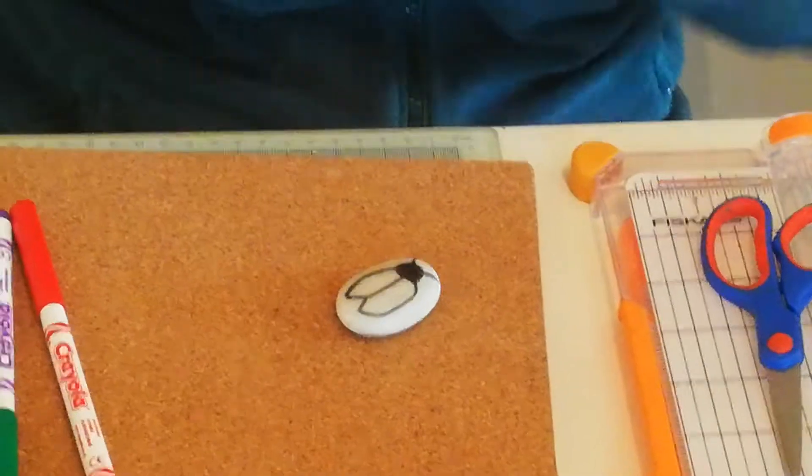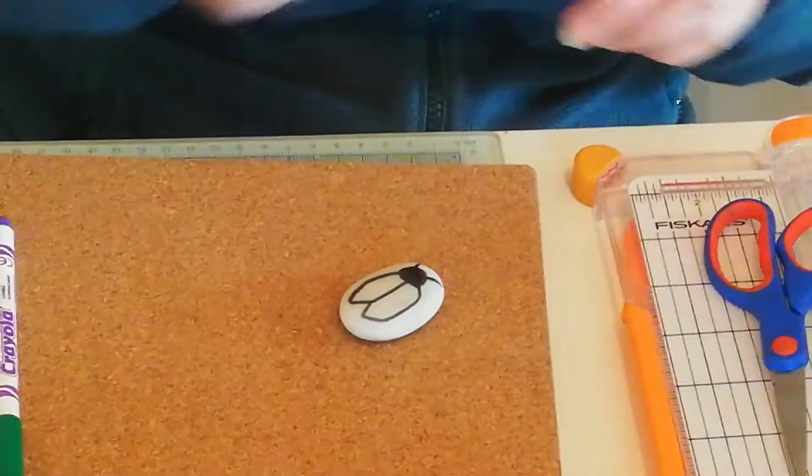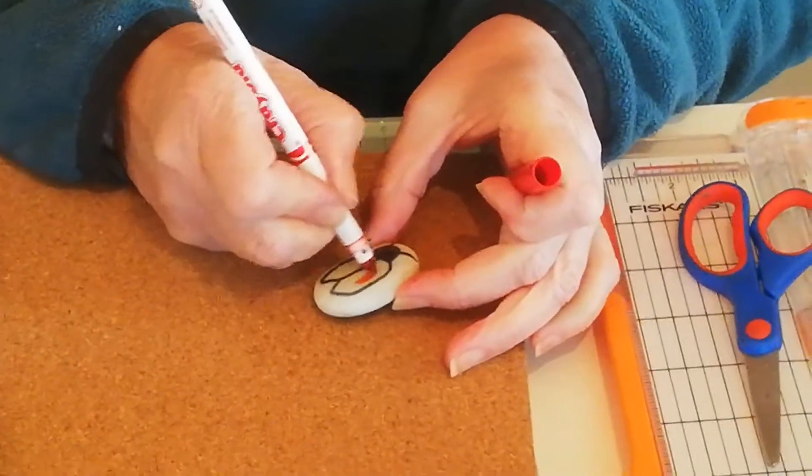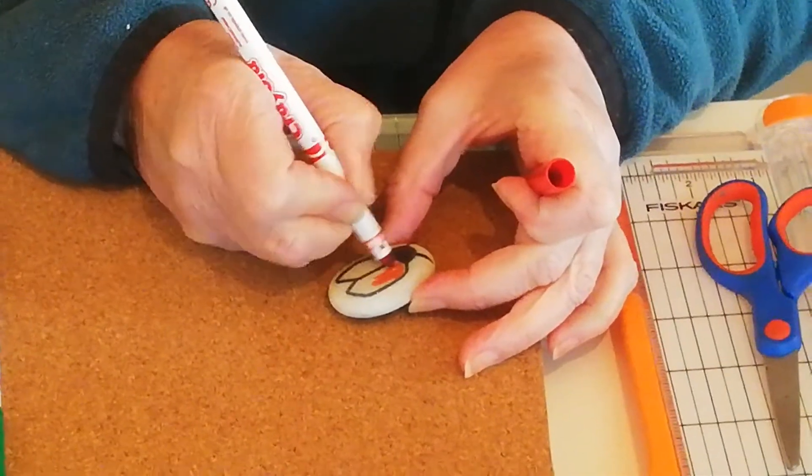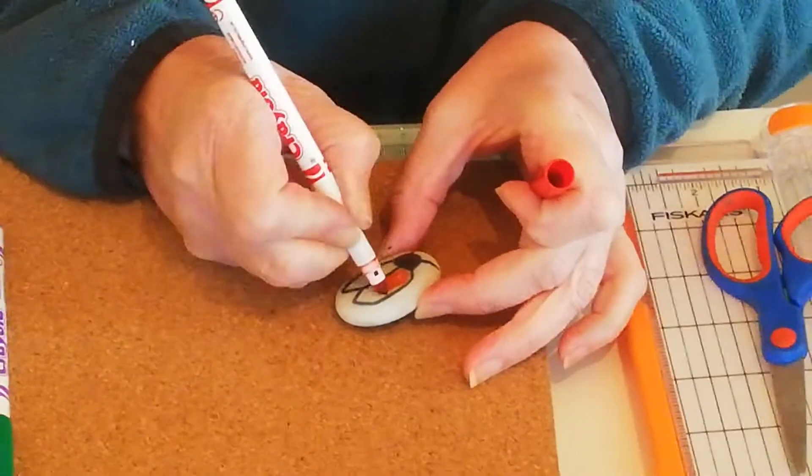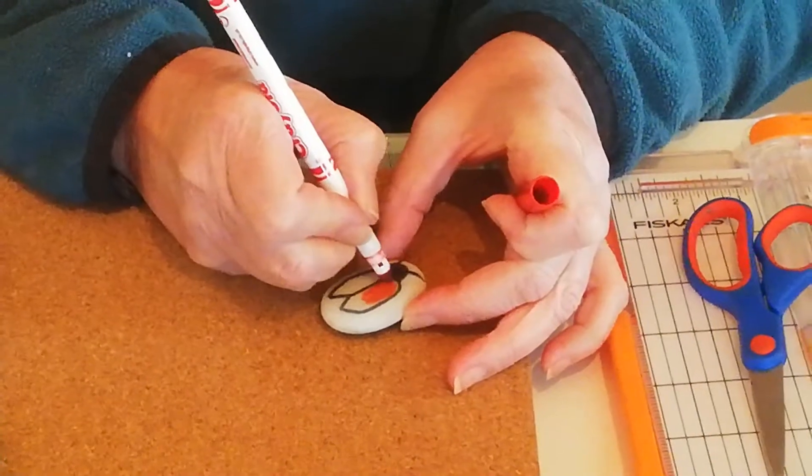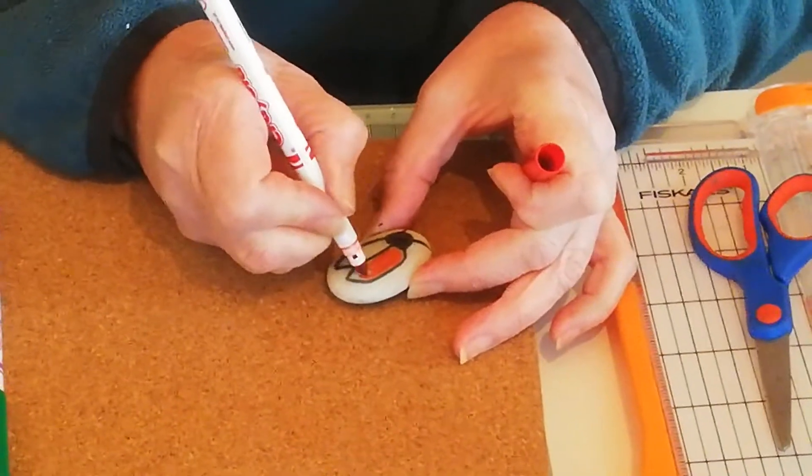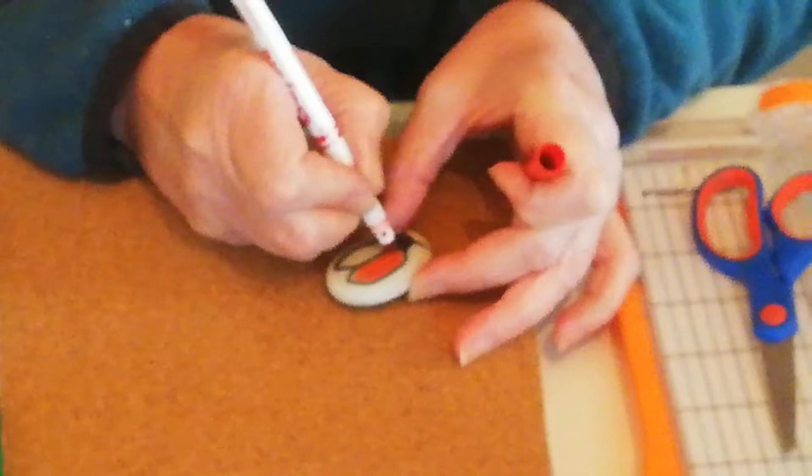Then we're going to change colors and take our red Crayola and color in his wings like this. Now don't forget you can pause the video at any stage if you're falling behind to have a look at what I'm doing.